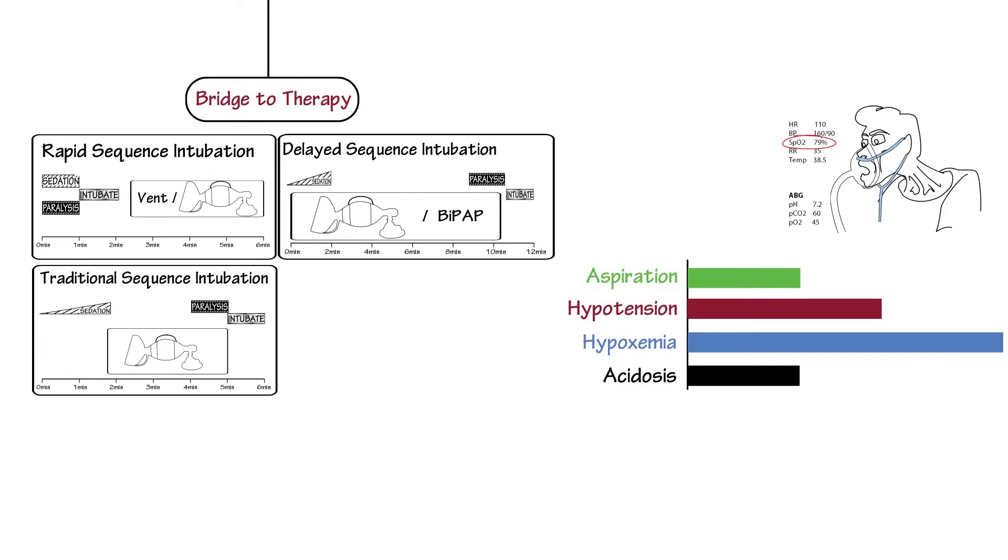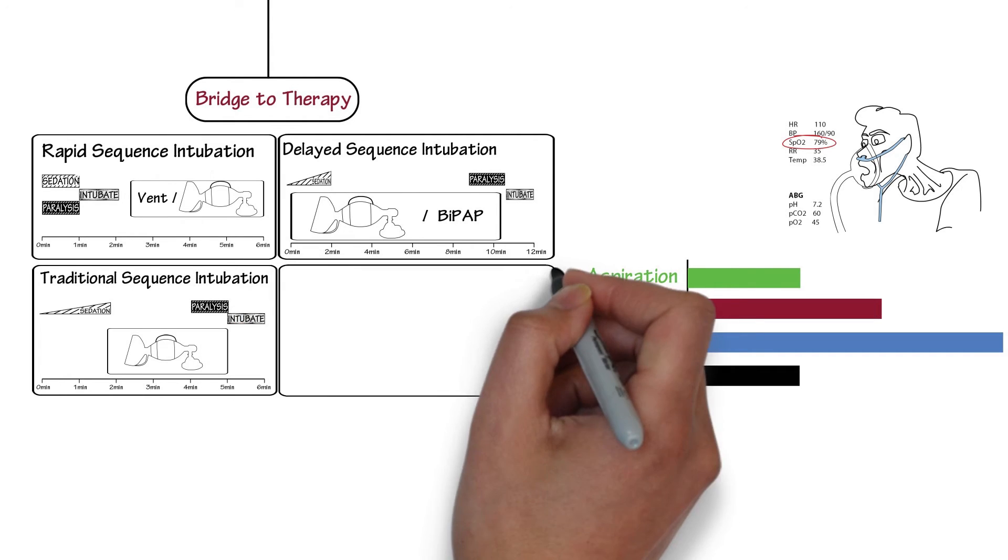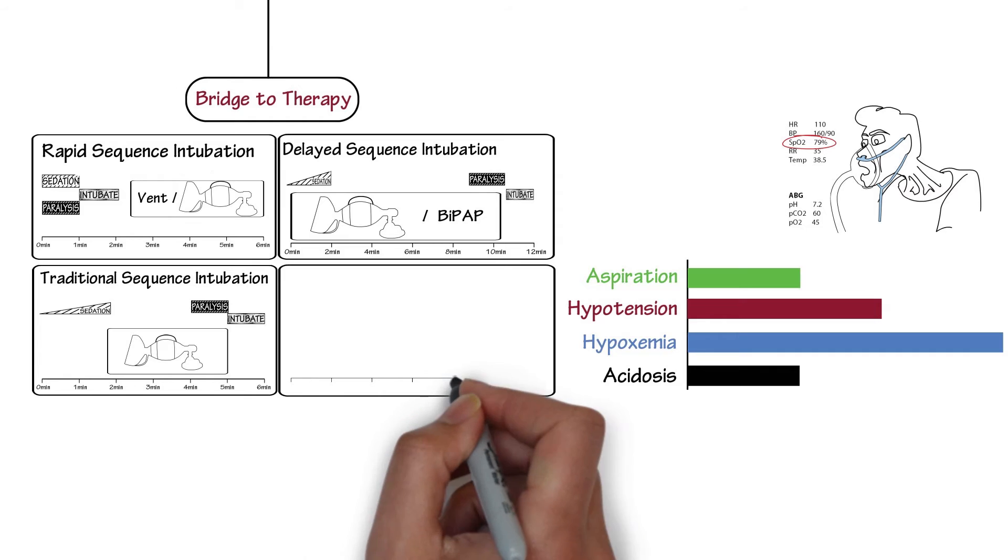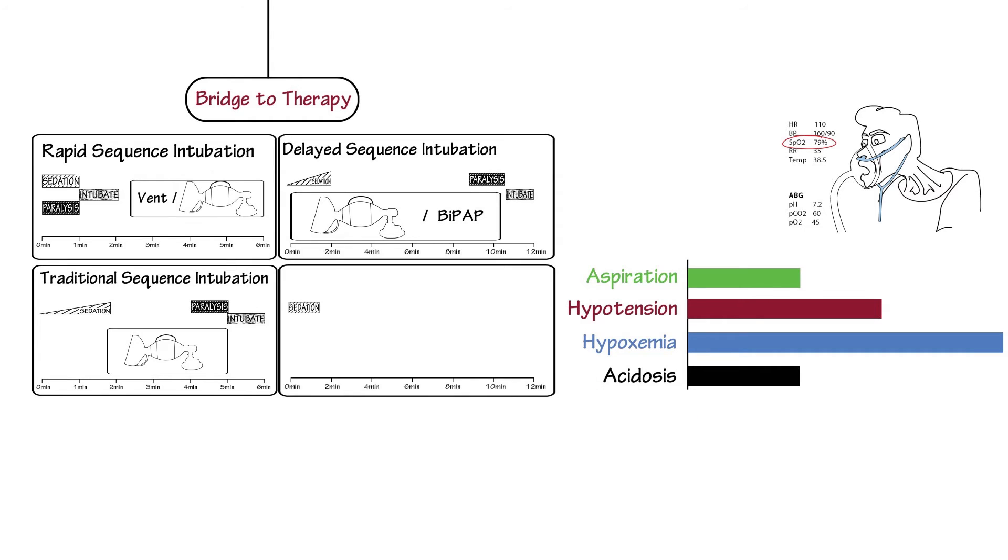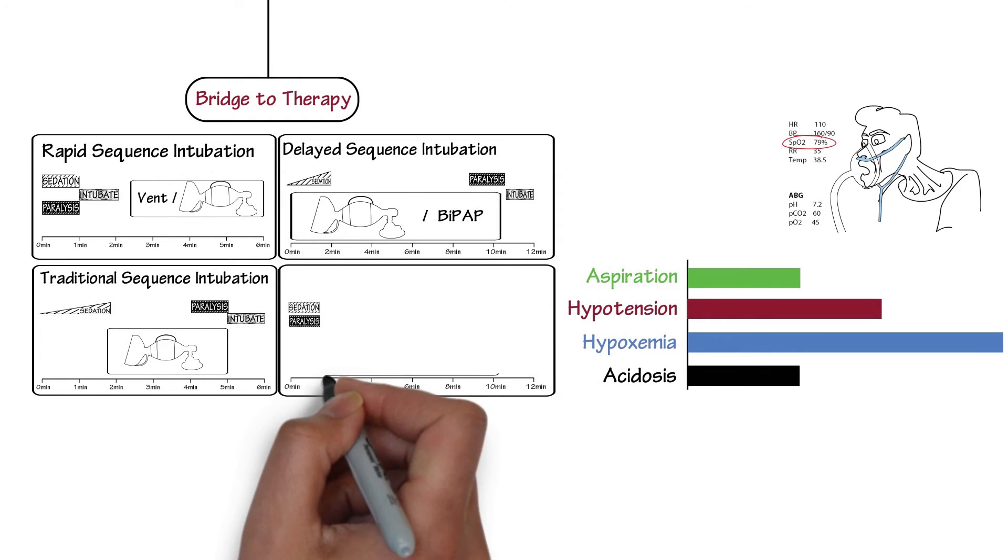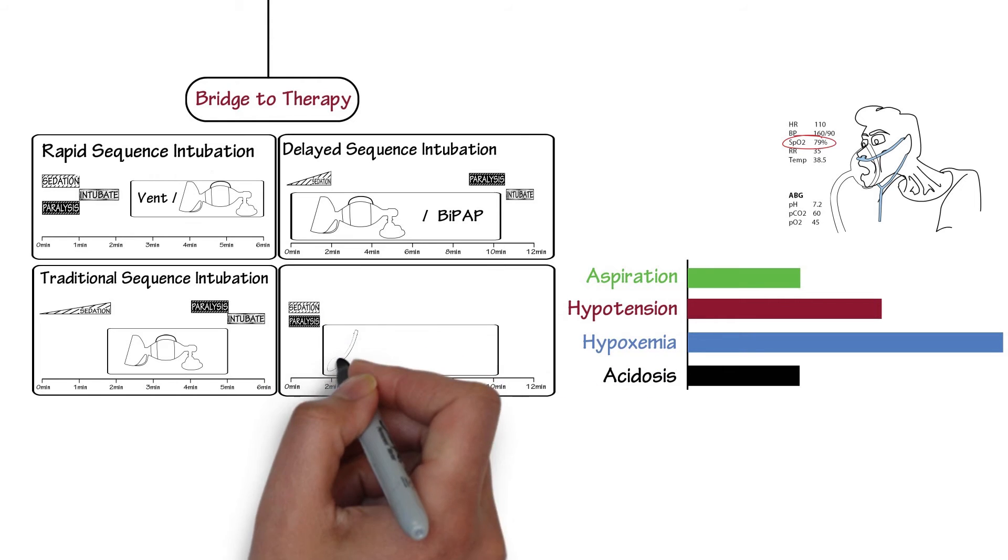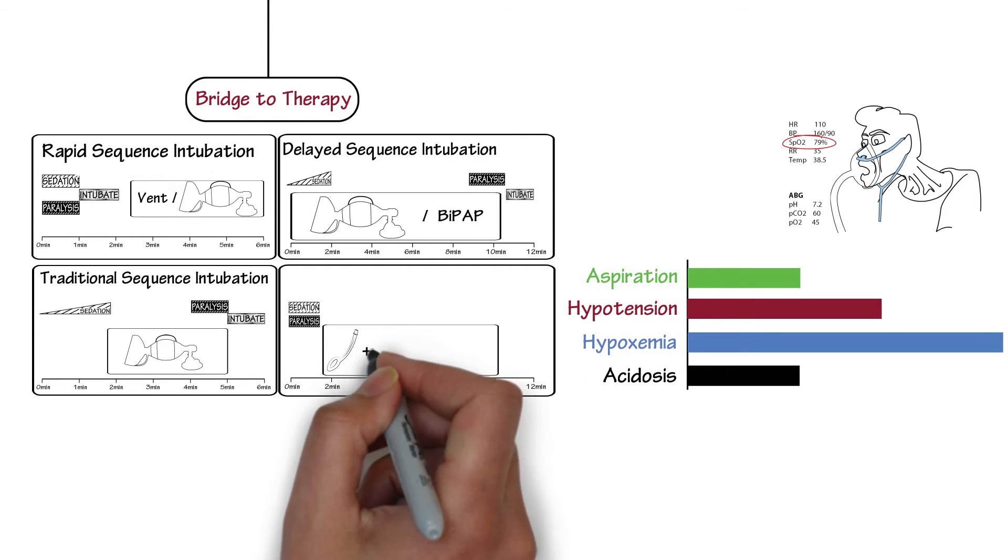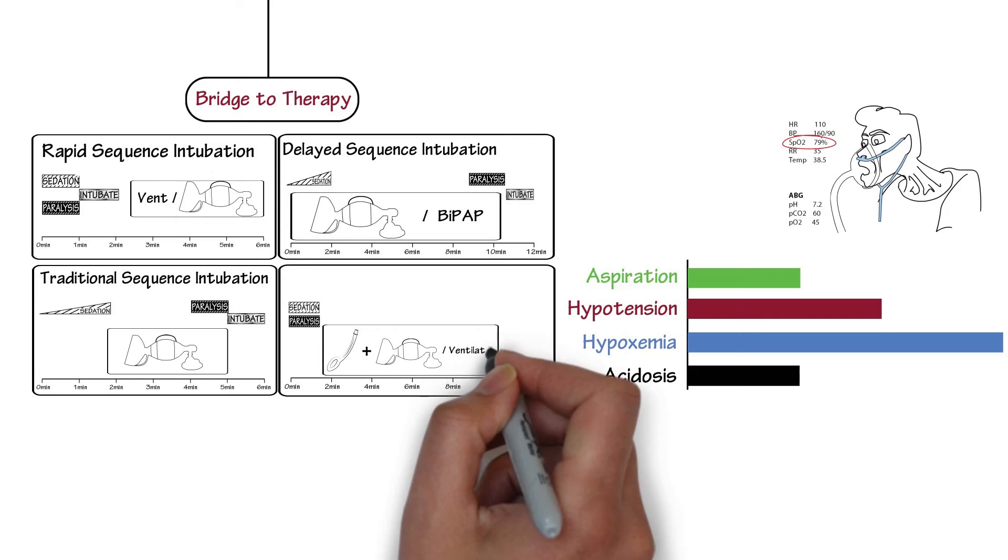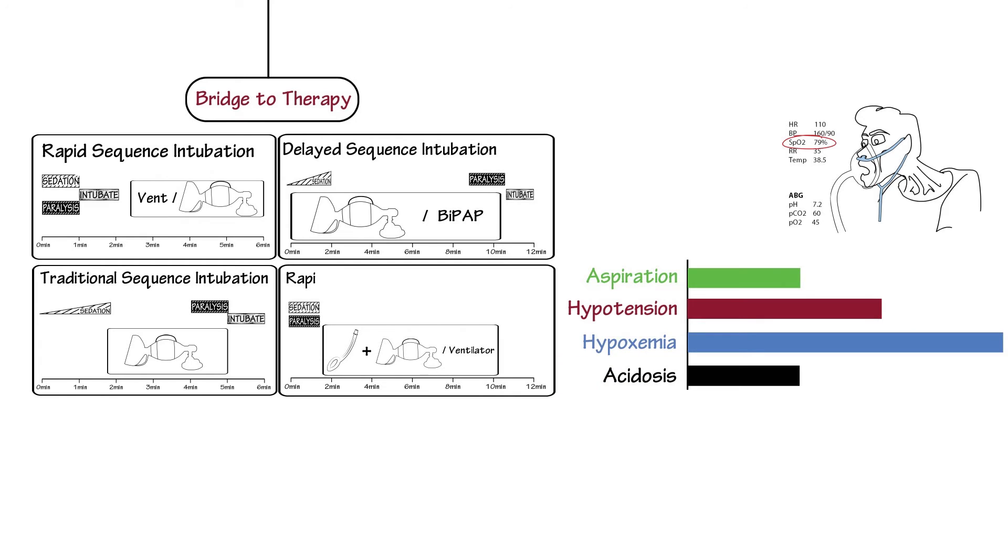Some people even take it a step further with a plan to place a supraglottic airway instead of an endotracheal tube after paralysis. One look and if you can't see the vocal cords, just slide in the supraglottic airway and continue oxygenation and ventilation. This is called rapid sequence airway and it doesn't force you to rely on the patient being an easy intubation or an easy mask.